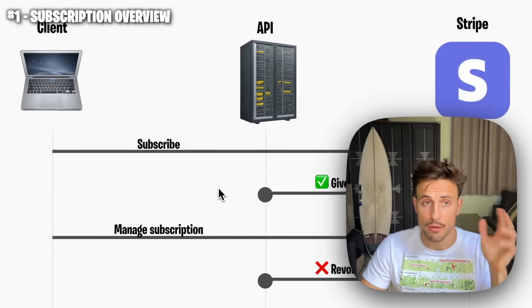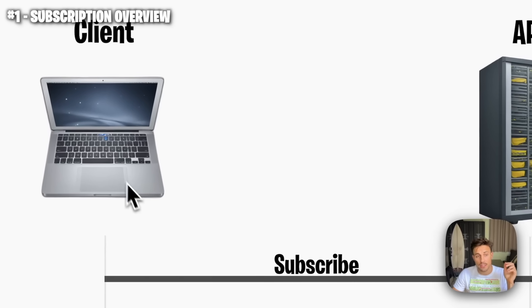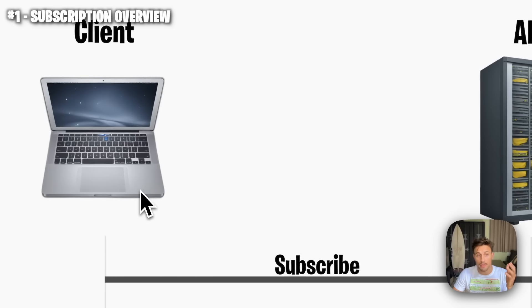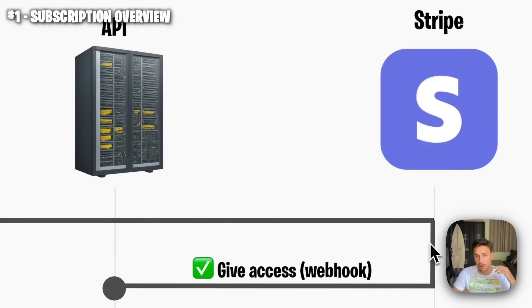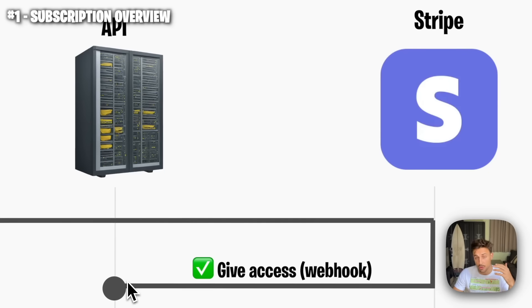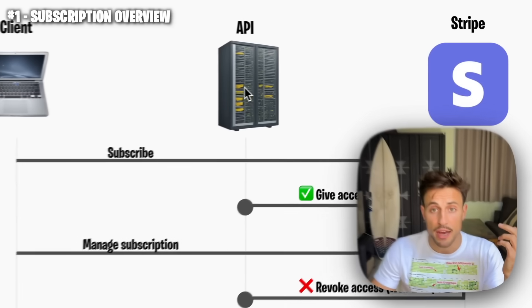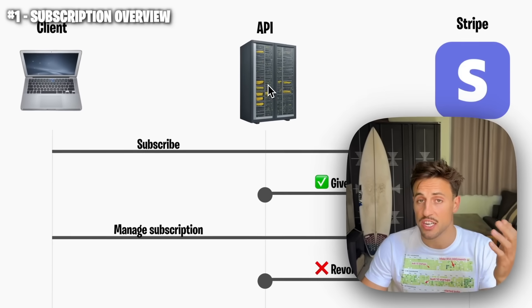Let's start with a quick overview of what we're going to build. On the client side, your customers will be able to select a yearly or monthly plan and subscribe to one of them by entering their credit card details. This goes straight to Stripe, creates the subscriptions and the customers, and Stripe is going to update our API through webhooks to tell us whether or not we should give access to the user. For the API I'm using Next.js but you can use pretty much anything.